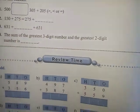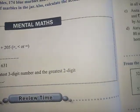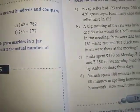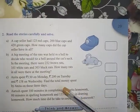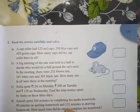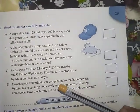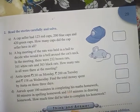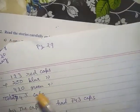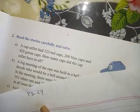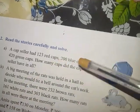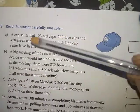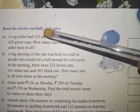Now go to next page, page number 29. Problem sums are there and always do problem sums in a separate page. On the page you have to write in this way: page number 29, problem sums, you have to write here.